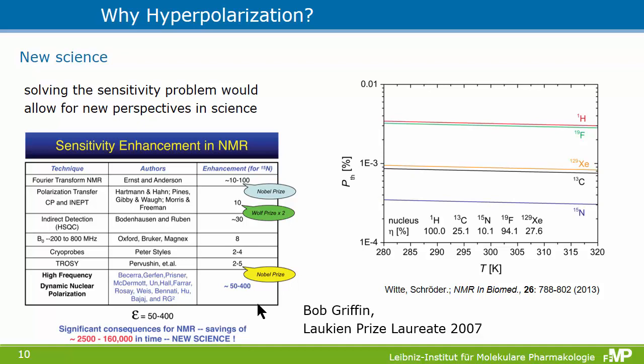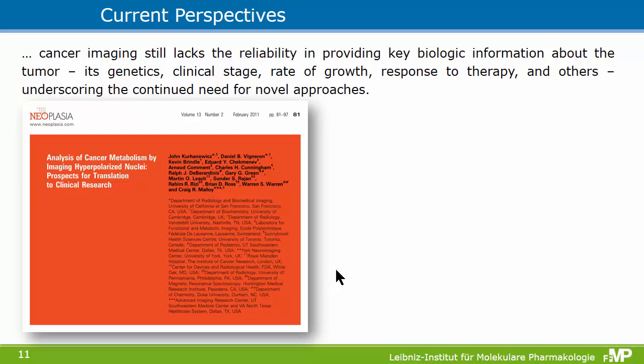This slide is borrowed from a postdoc from Bob Griffin, who got the Laukian prize in 2007 for development of DNP methods. An important message is that any enhancement factor you achieve gives you a quadratic reduction in acquisition time. The DNP methods they developed had an enhancement factor of 50 to 400, giving a reduction in measurement time of 2,500 to 160,000. This means that with enhanced sensitivity you can suddenly address problems that were previously completely inaccessible due to prohibitively long acquisition times that no biological sample could stand.